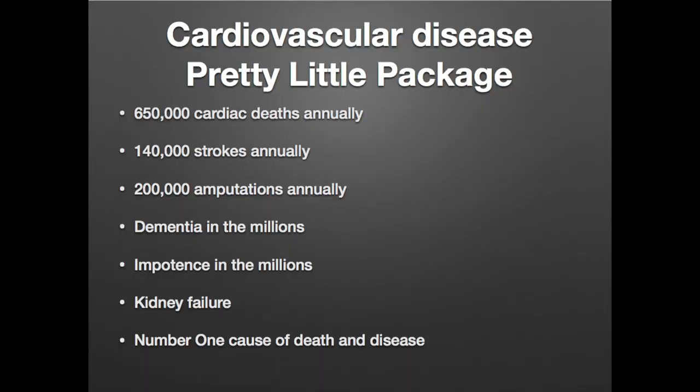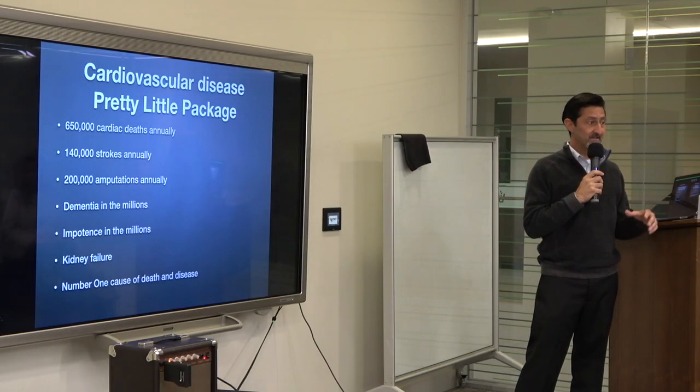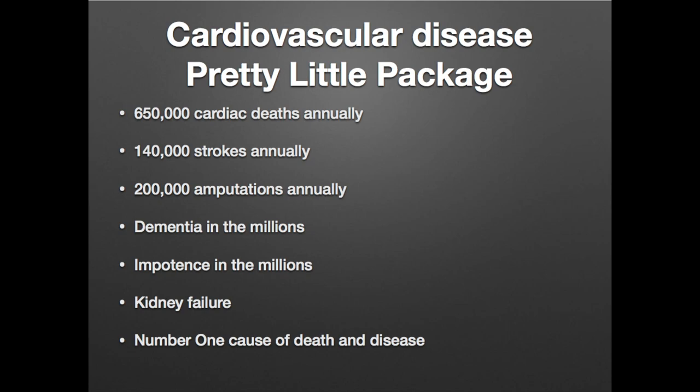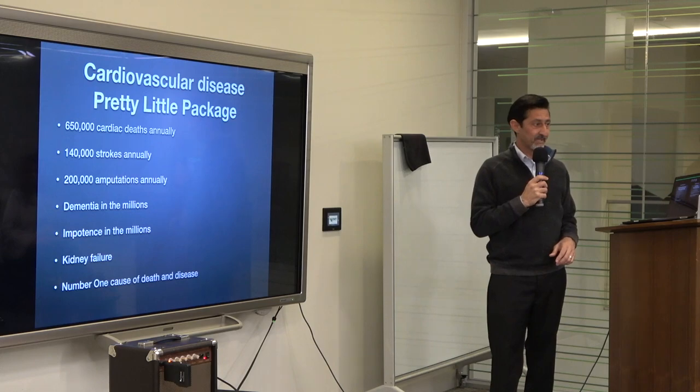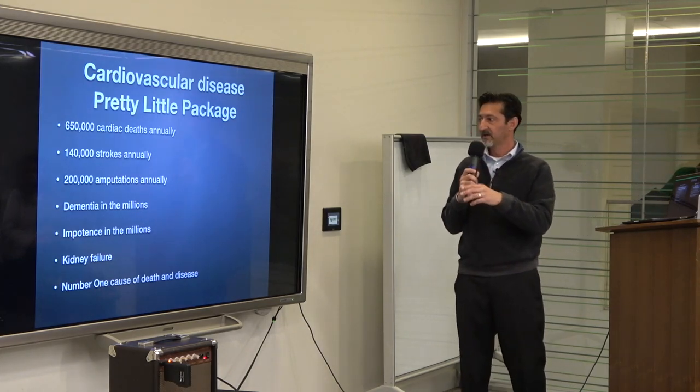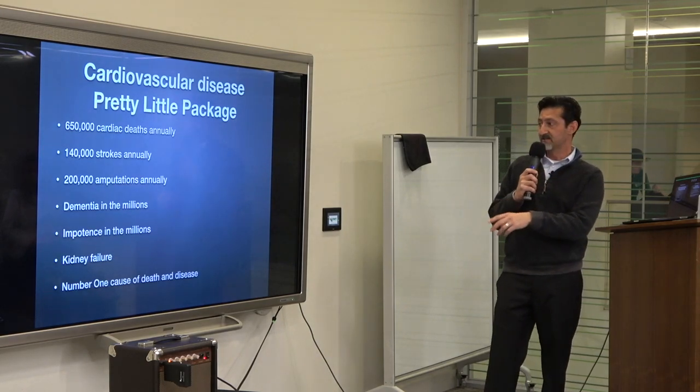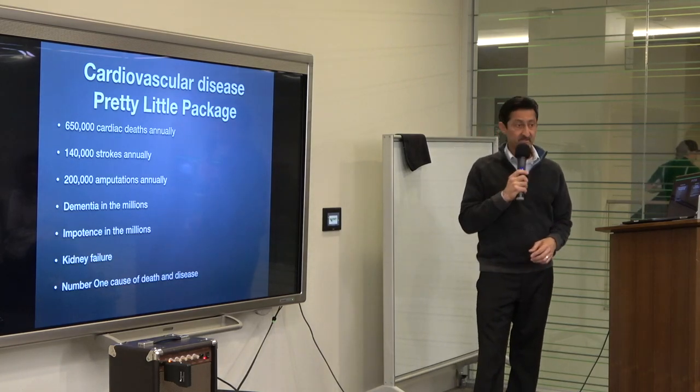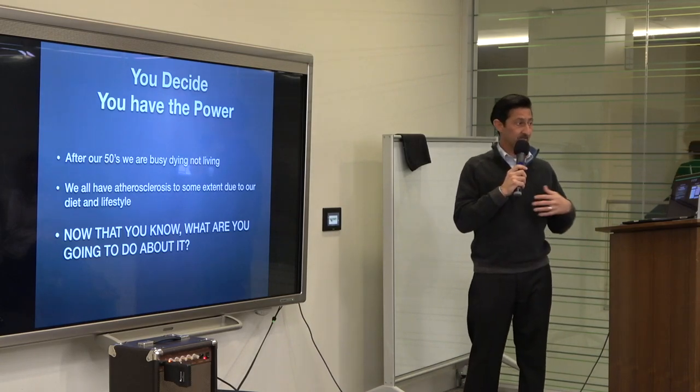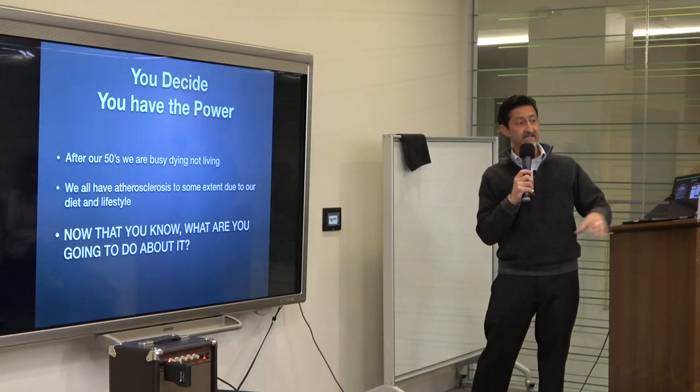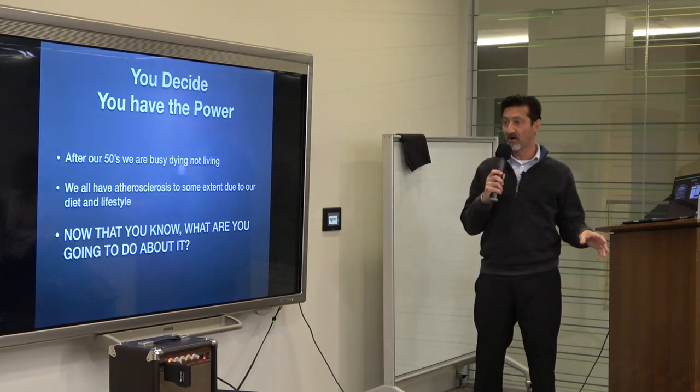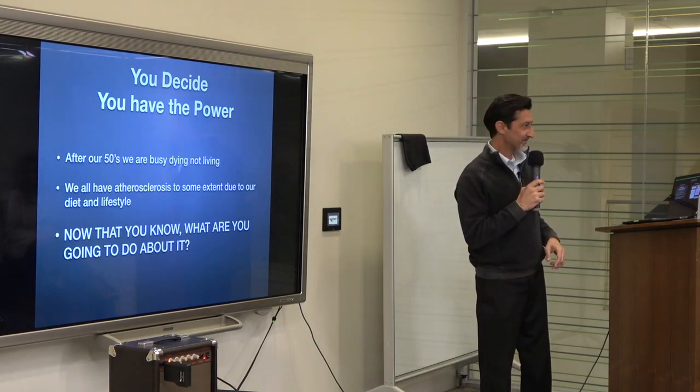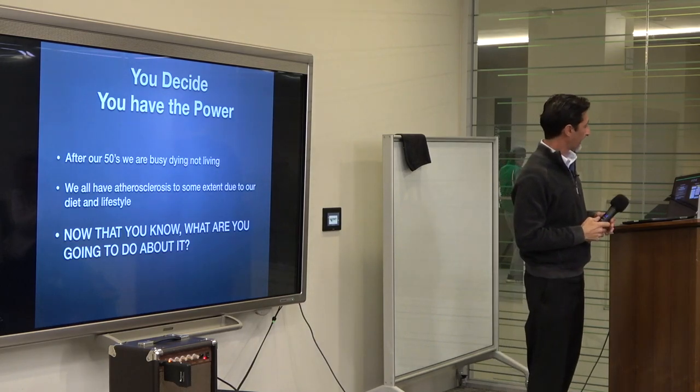Let me sum up cardiovascular disease for you in one pretty little package. There are 650,000 cardiac deaths annually. There's 140,000 strokes annually. There's 200,000 amputations annually. That's a million right there. That doesn't include dementia, which is in the millions and going to get worse. It doesn't include the impotence in the millions. It doesn't include kidney failure. It is the number one cause of death and disease in the United States. After our 50s, my patients were busy dying, not living. We all have atherosclerosis to some extent due to our diet and lifestyle. So now what I would say is, now that you know about it, what are you going to do? Thank you very much.